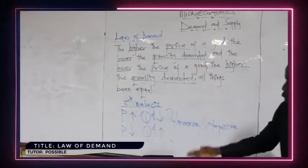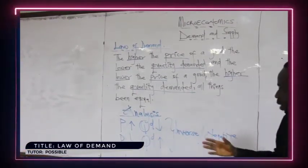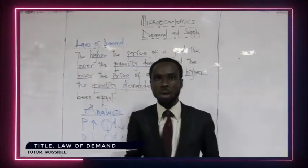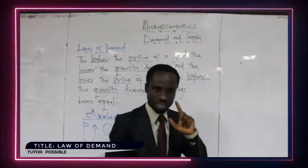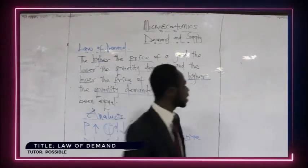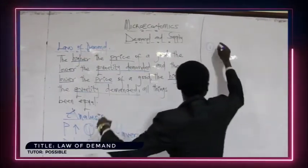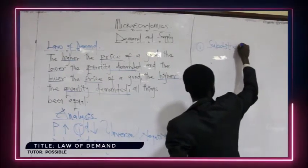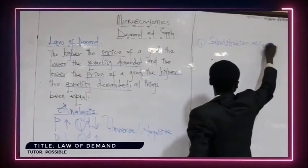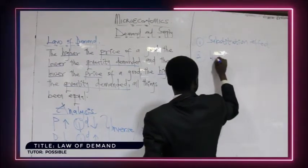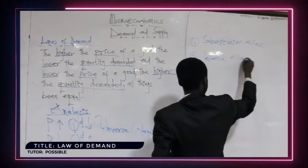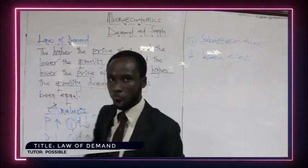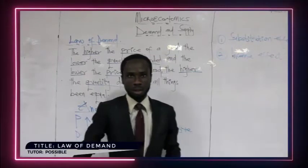The law of demand is possible because of two things: one is the substitution effect, and the other one is the income effect. Under the substitution effect, we are saying that when the price of a commodity increases while the other commodities remain the same.